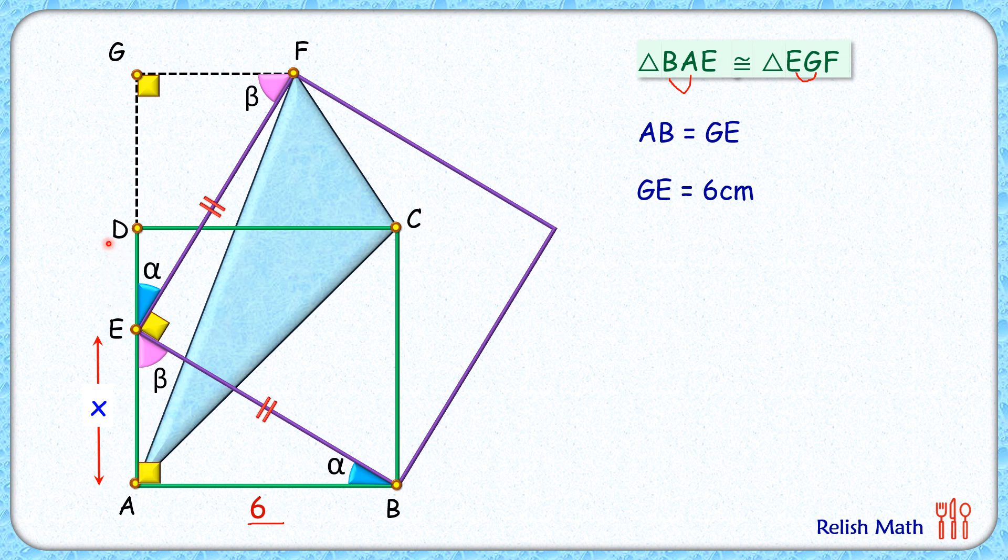Now this full length is 6, so DE length will be 6 minus x. Also, GE, that's this full length, is 6 centimeters. Thus, the remaining length, that's GD, GD will be x centimeters.